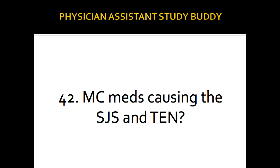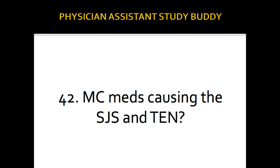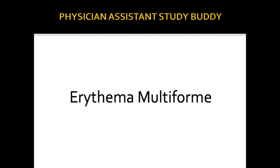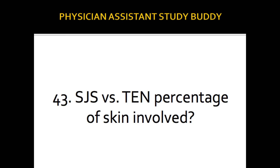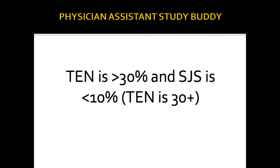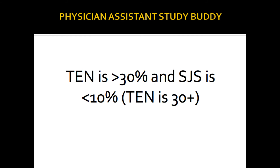Most common meds causing SJS and TEN: sulfa drugs and anticonvulsant drugs. Sulfa is most likely what they'll mention. They'll tell you a kid has taken sulfa medications and ask what's the most common concern — SJS and TEN. How do you differentiate these two by percentage of skin involved? TEN is greater than 30%; SJS is less than 10%. My mnemonic: TEN is 30-plus.